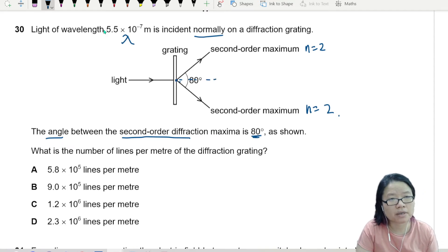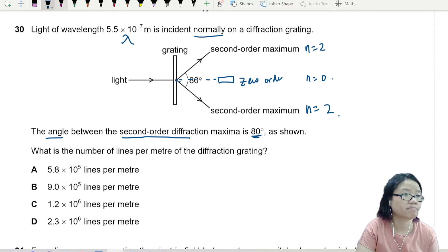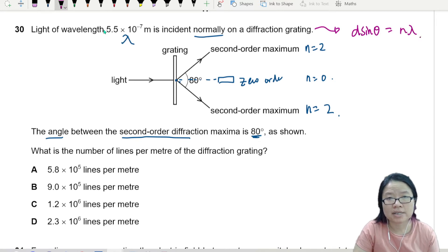In the middle here is zero order. So whenever we use the diffraction grating equation, hopefully you remember this, it will be d sin θ equals n λ. This θ is measured from zero order.